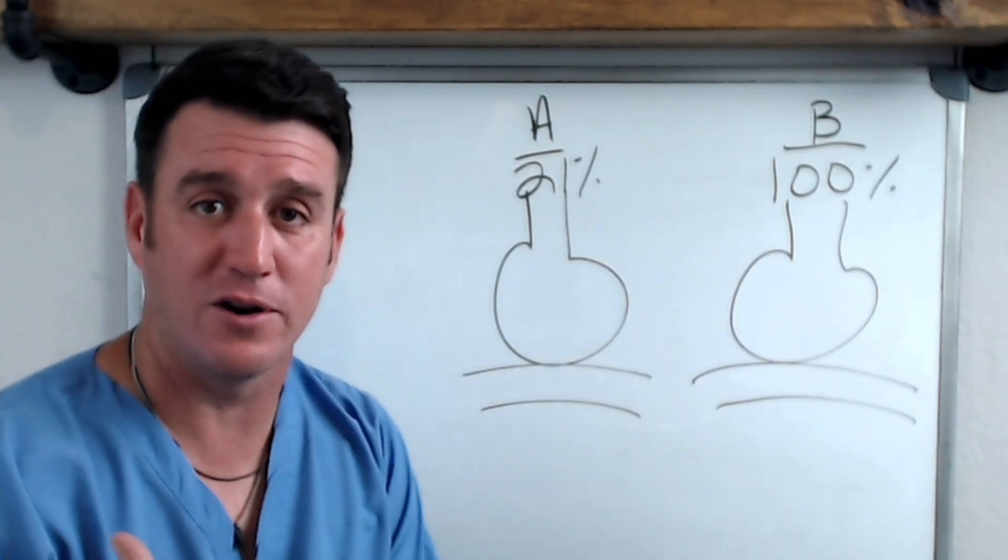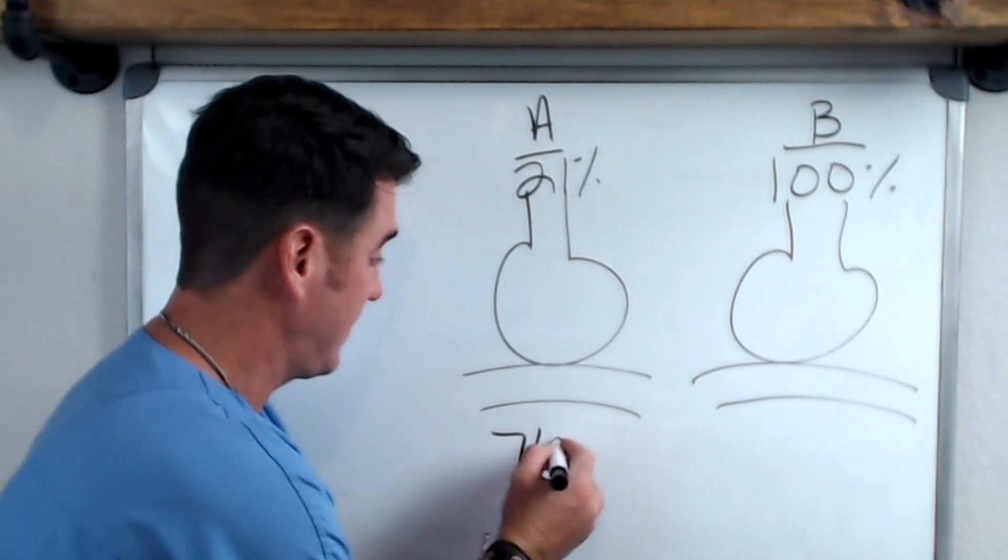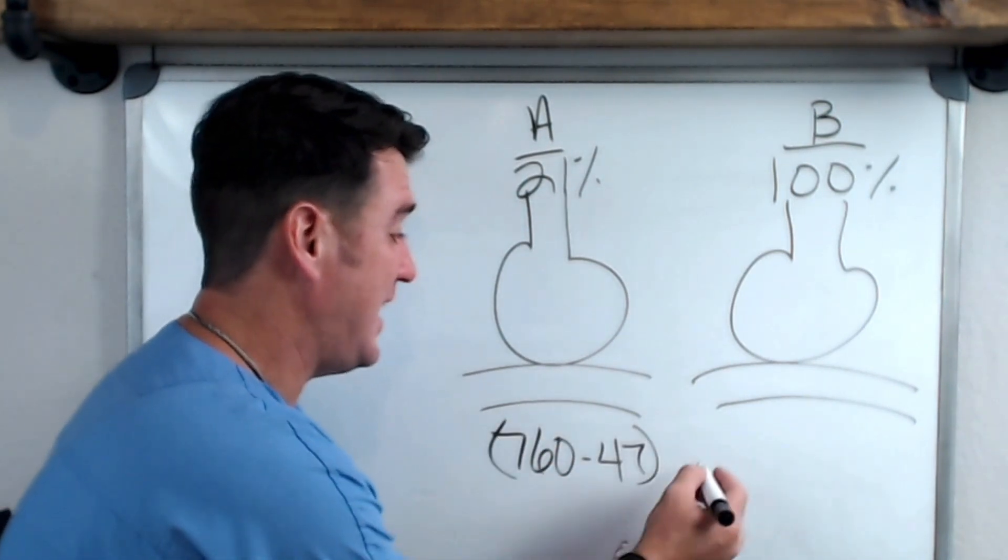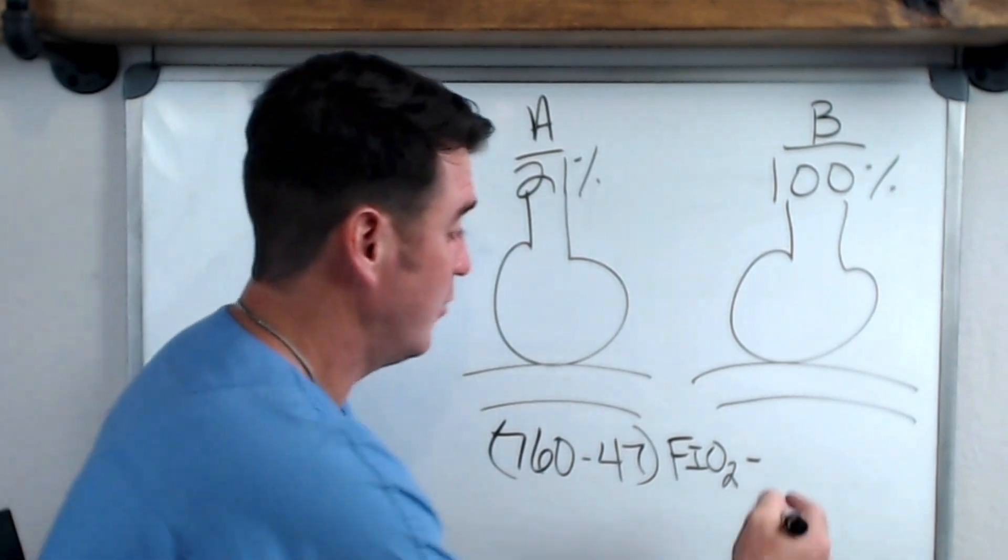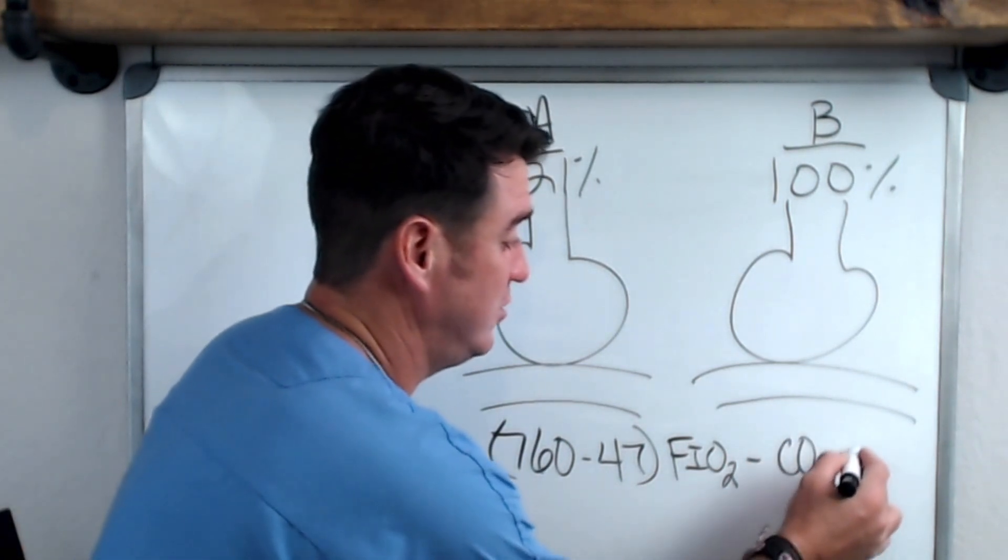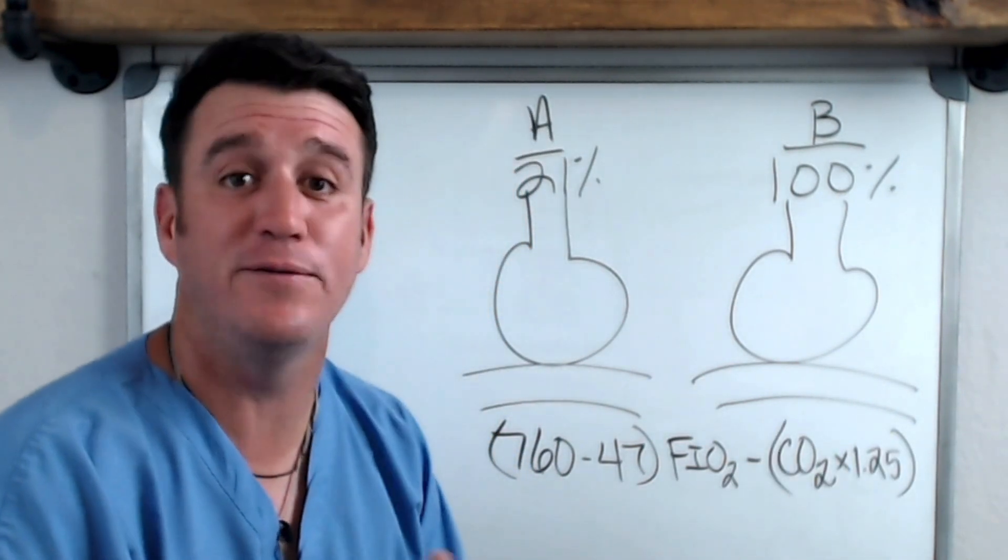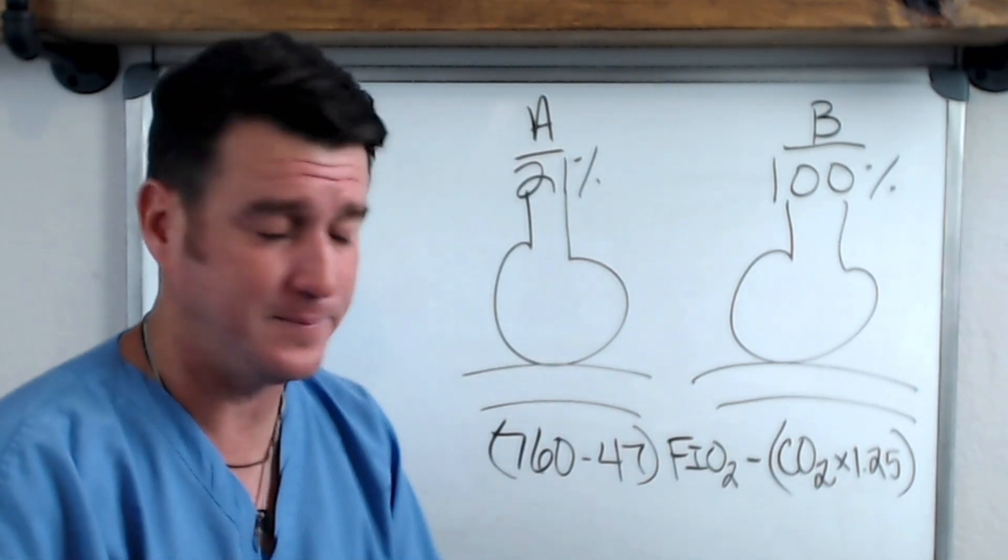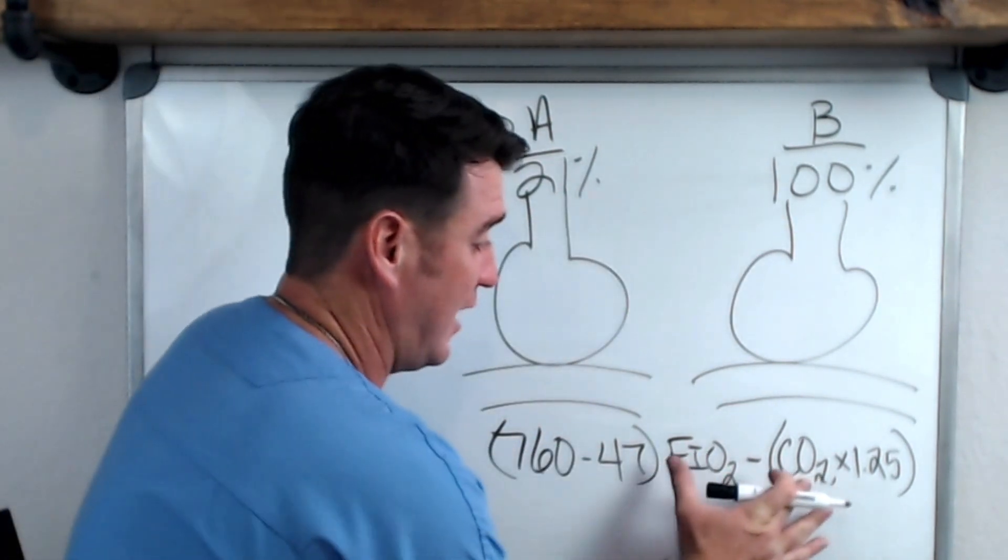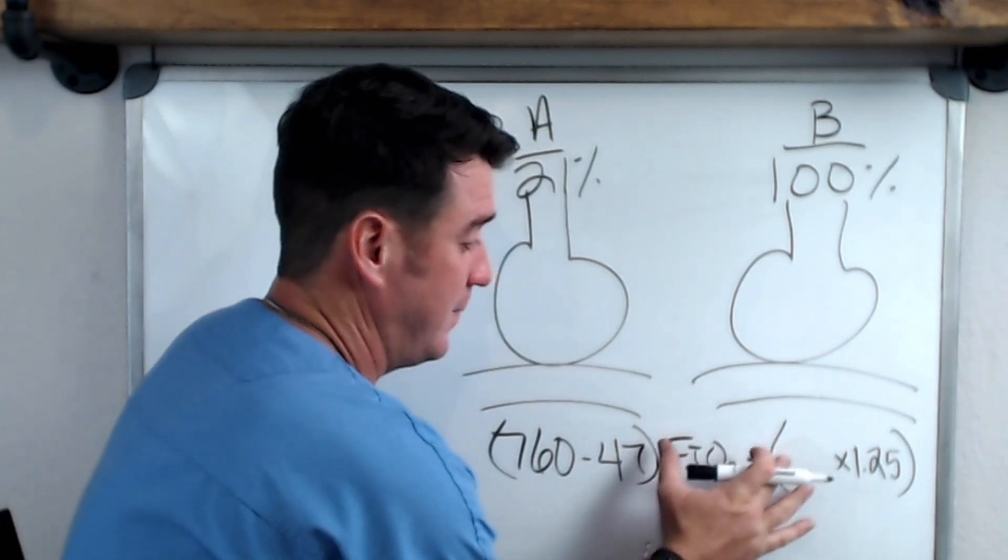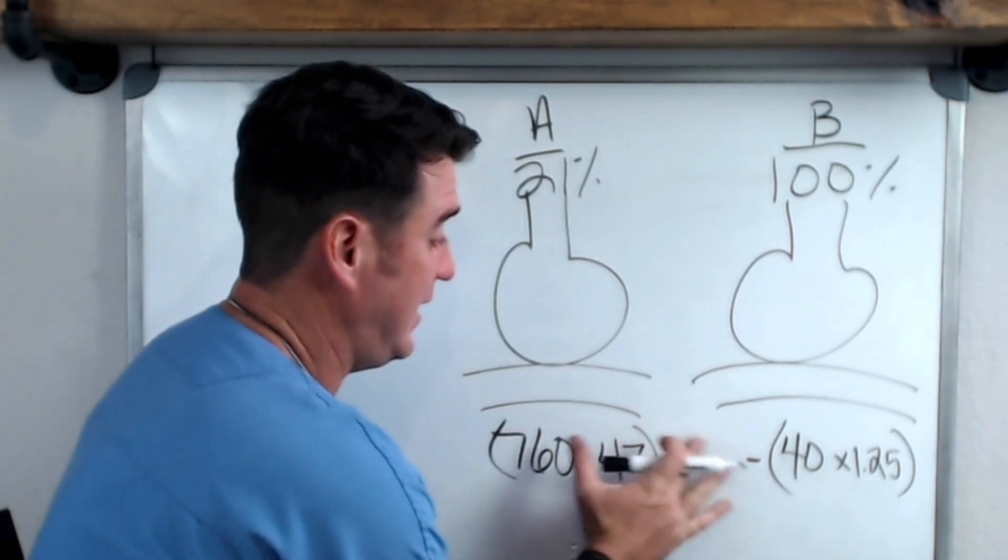To do that we have to know the alveolar air equation. The alveolar air equation says: barometric pressure, we're just going to take 760 minus water vapor pressure, multiply times our FiO2, and then we have to subtract out for alveolar CO2. We do that by multiplying our PaCO2 times our respiratory quotient. Some people say divide by 0.8, some people say multiply by 1.25 - they'll give you the same answer. Now for CO2 we're just going to assume that we have a normal of 40.